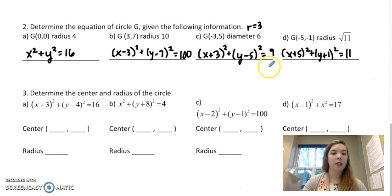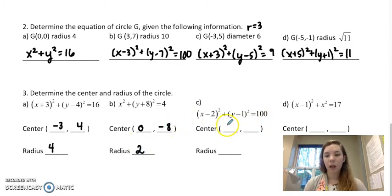Determine the center and the radius again. So again, remember it's opposite sign. So you'd have negative 3, positive 4, and your radius is the square root of 16, which is 4. This one would be 0 for x, negative 8 for y. The square root of 4 is 2. This center would be positive 2 and positive 1. The square root of 100 is 10.